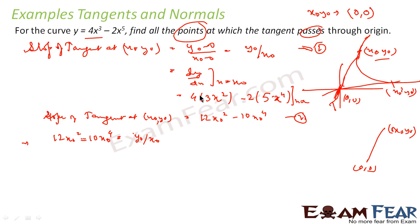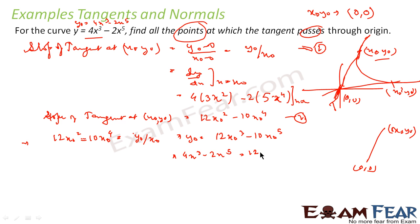Solving this, multiplying both sides by x₀: y₀ = 12x₀³ − 10x₀⁵. I also know from the curve that y₀ = 4x₀³ − 2x₀⁵. Setting these equal: 4x³ − 2x⁵ = 12x³ − 10x⁵. Rearranging: 8x⁵ = 8x³, which gives 8x³(x² − 1) = 0, and factoring further: 8x³(x + 1)(x − 1) = 0.